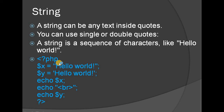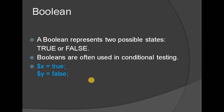Boolean means true or false. One particular condition is true or false. It can be a boolean — true or false. For example, $x = true and $y = false. Booleans are often used in conditional testing.